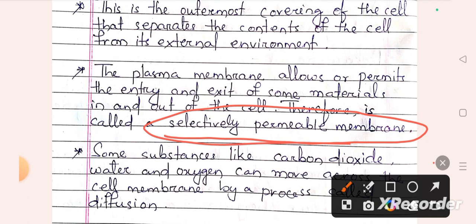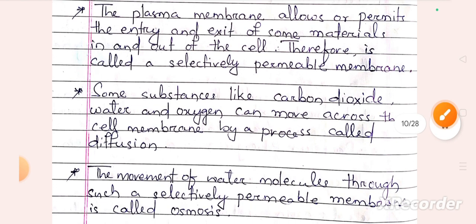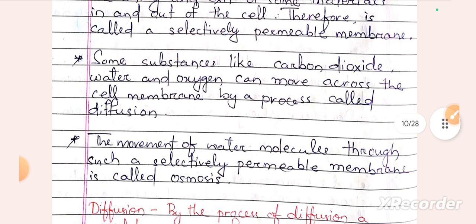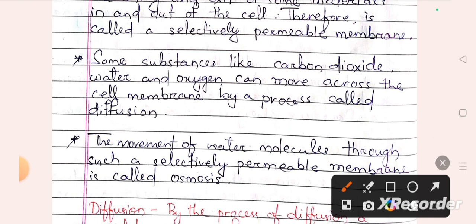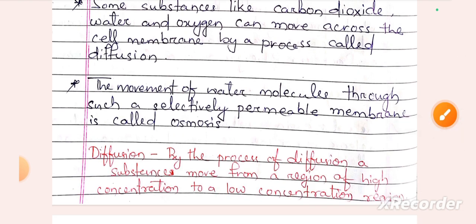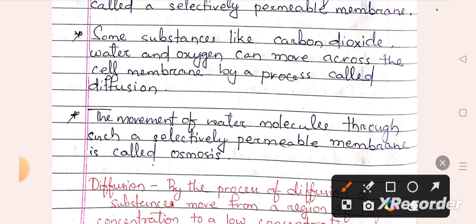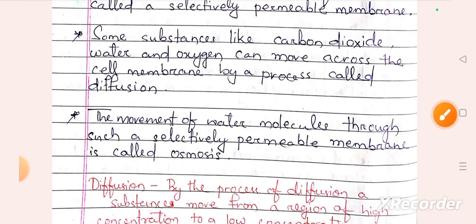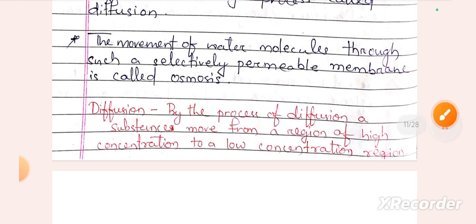Some substances like carbon dioxide, water, and oxygen can move across the cell membrane by a process called diffusion. The movement of water molecules through a selectively permeable membrane is called osmosis. By diffusion, a substance moves from a region of high concentration to a region of low concentration.